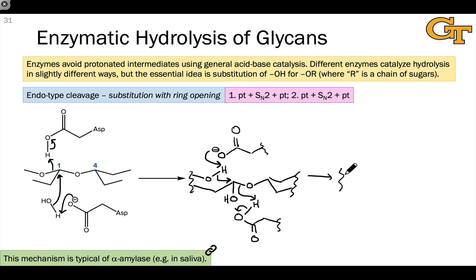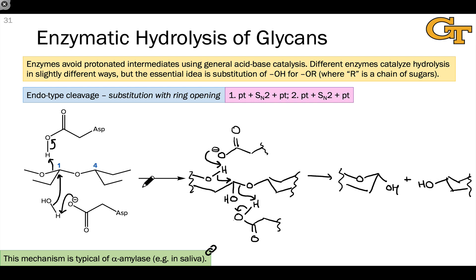This gives us the final products — the two separated monosaccharide units. Here's the one on the left with its hydroxyl group from the very first step, still there. The one on the right has its hydroxyl group that was present in the original polysaccharide; it just picked up a proton from the general acid catalyst upon bond cleavage in the second step. So we have overall a general acid and general base catalyzed SN2 reaction in the first step at carbon-1, and then a general acid and general base catalyzed SN2 reaction again at carbon-1 to actually separate the monosaccharides.